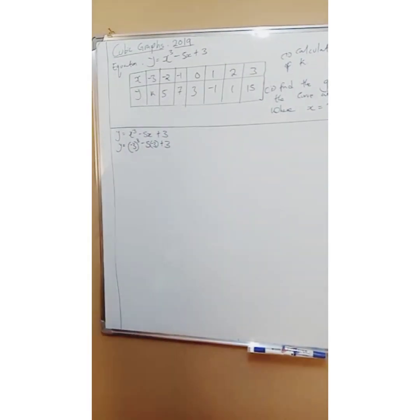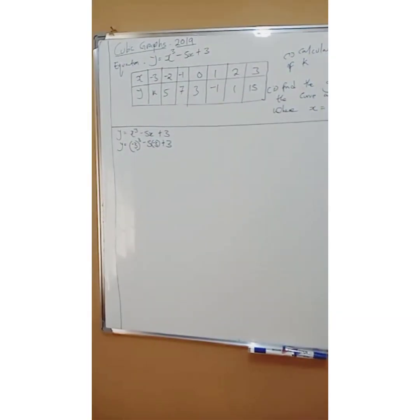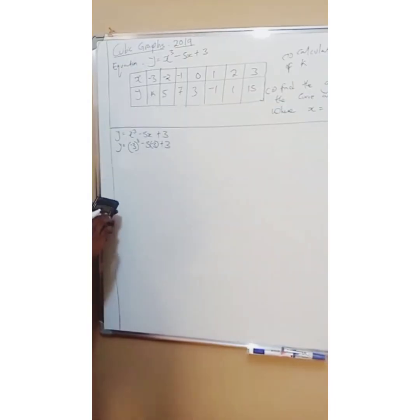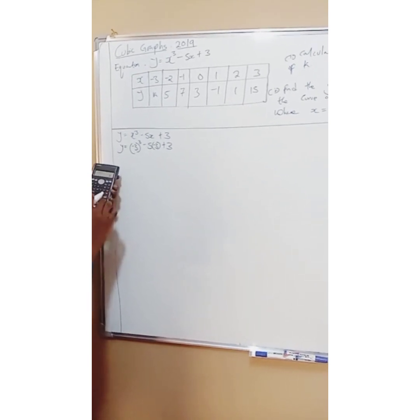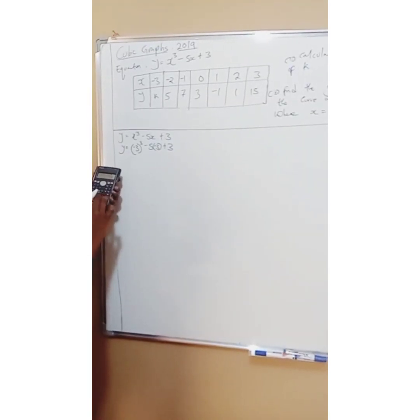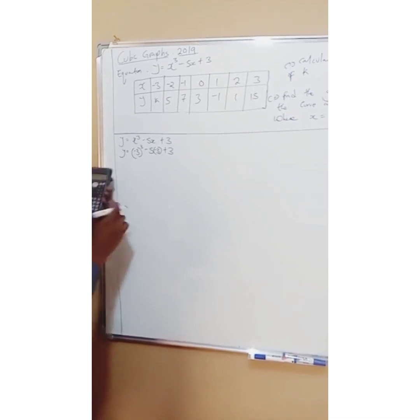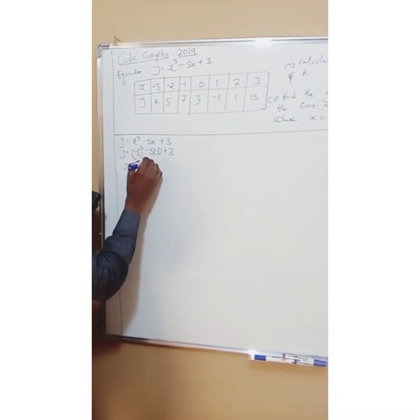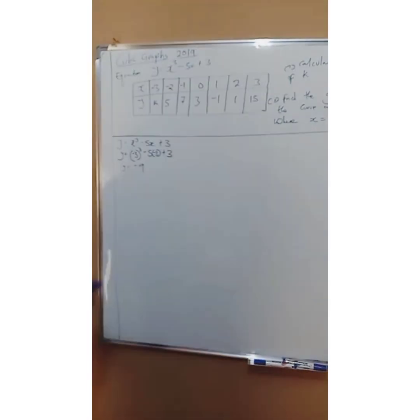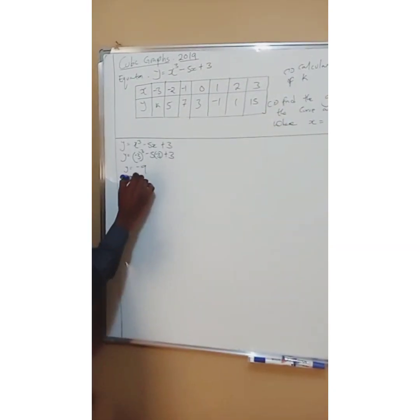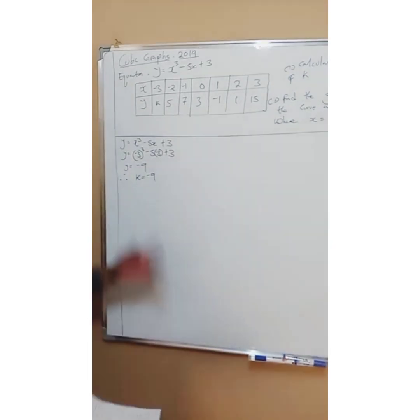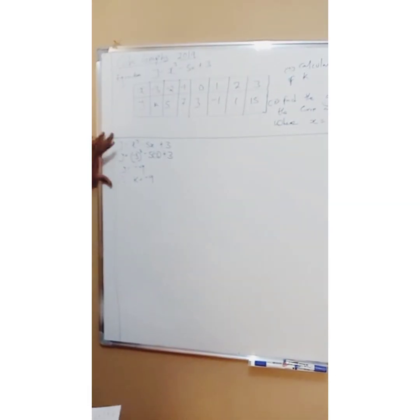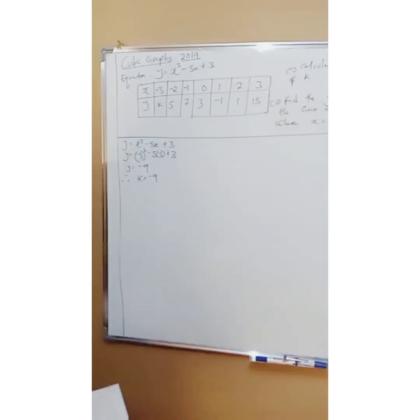You can use a calculator — it's Paper 2. Working this out gives y = −9, therefore k equals negative 9. So k = −9. You have now found your value of k. All of this working is written on your sheet of graph paper as instructed.